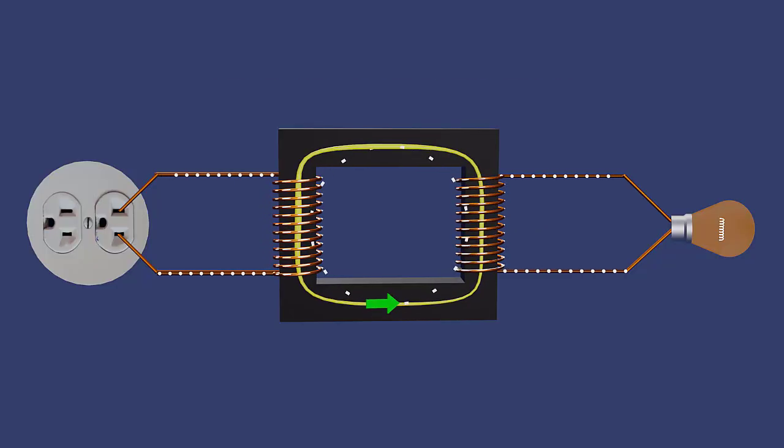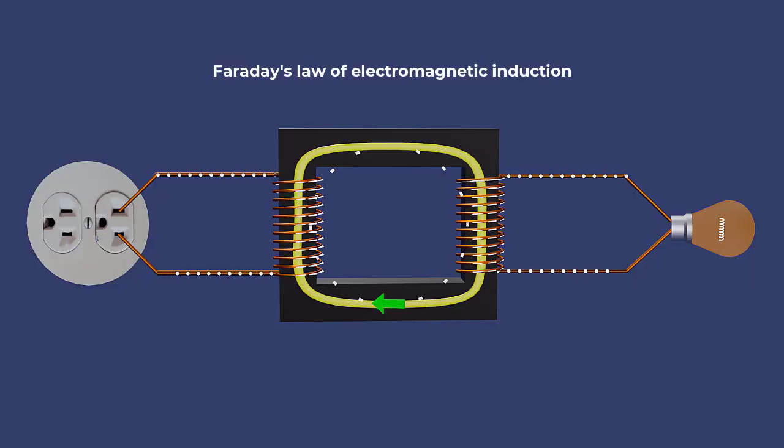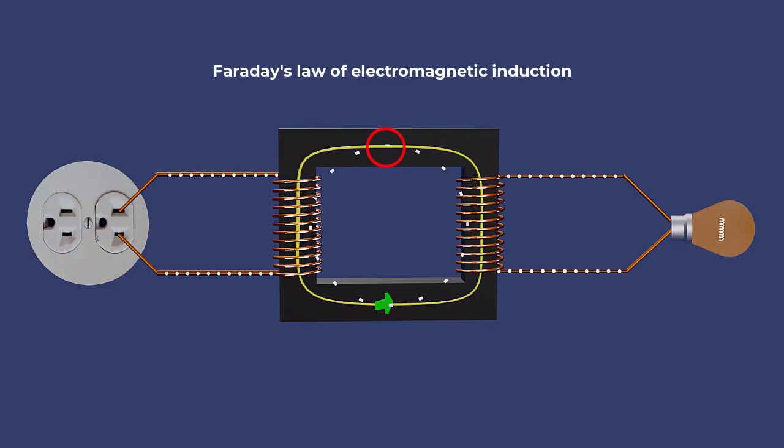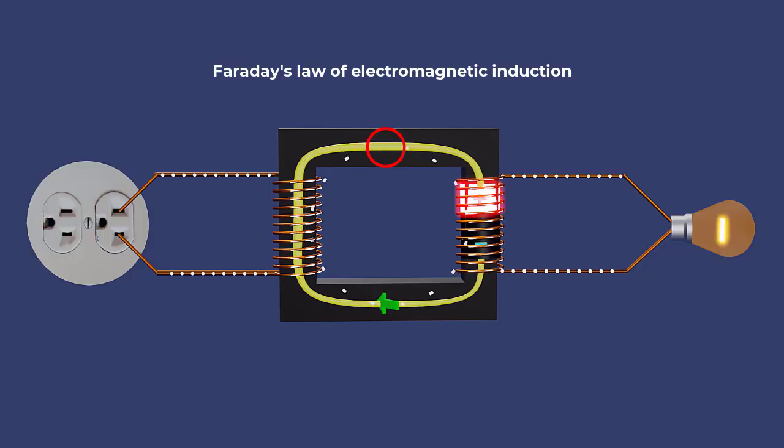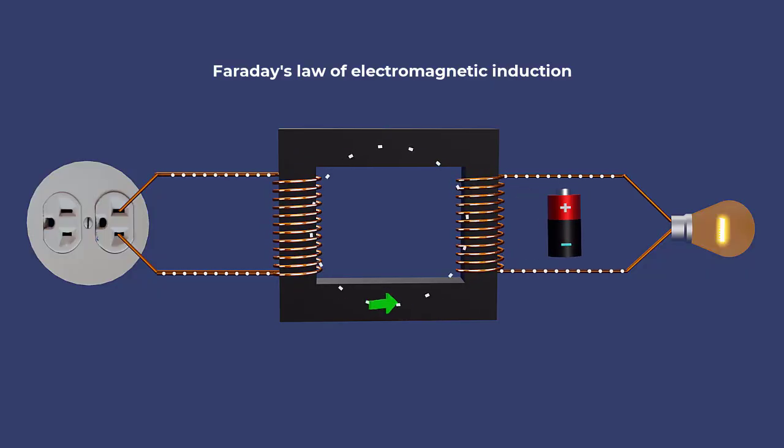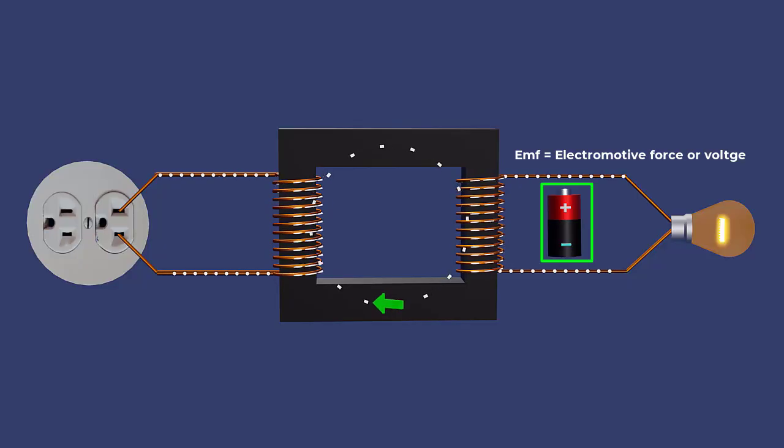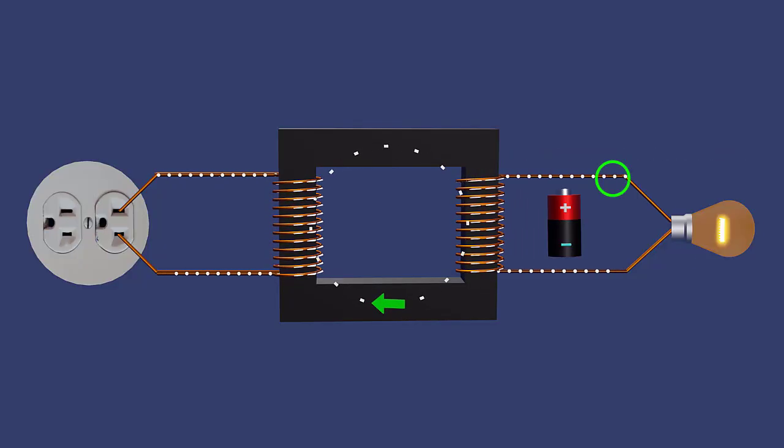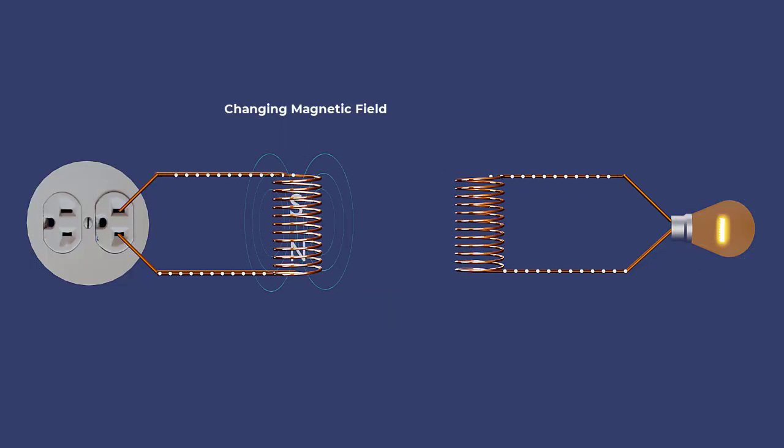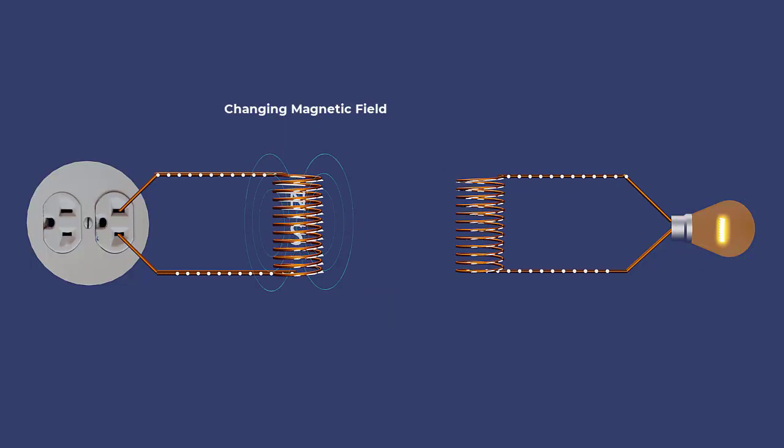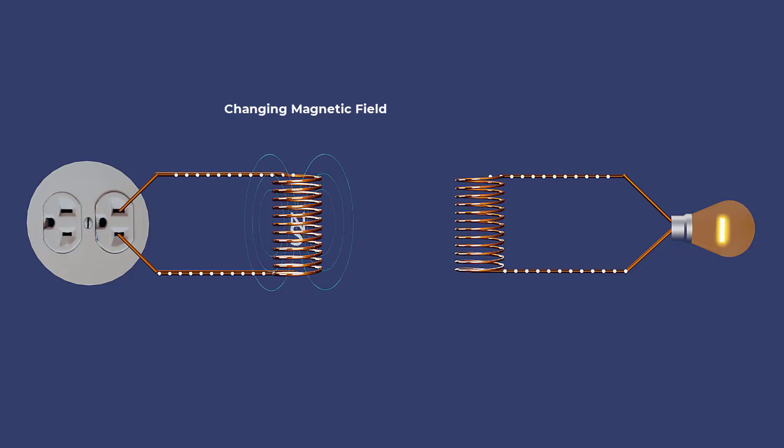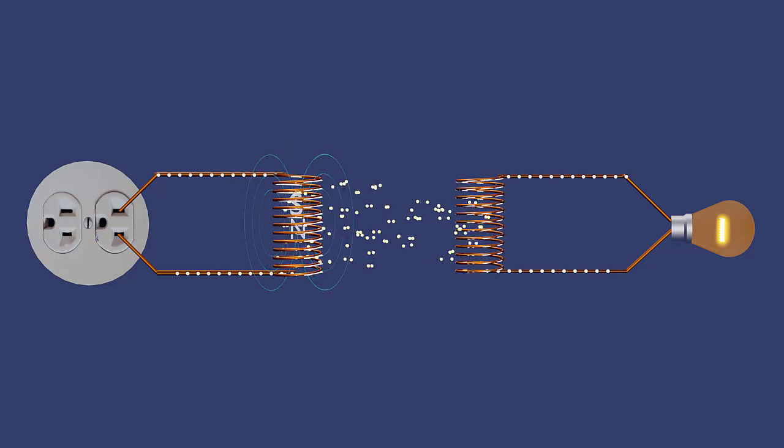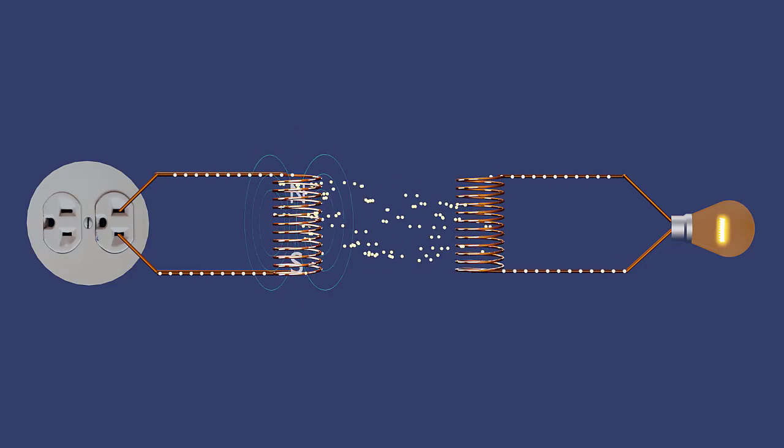According to Faraday's law of electromagnetic induction, this varying flux generates a varying electromotive force or voltage in the secondary winding. The EMF induced in the secondary coil causes a current to flow in the load. The changing magnetic field is the key to the transformer's operation, allowing energy transfer between primary and secondary coils.